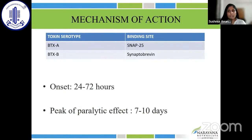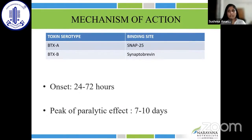The binding site differs for different types of botulinum toxin. For botulinum toxin type A, it is at SNAP25, and for botulinum toxin type B, it is at synaptobrevin. The onset of action is 24 to 72 hours, and the peak of the paralytic effect is observed at about 7 to 10 days. This is very important in patient counseling — we must counsel patients that it takes about 7 to 10 days for the peak paralytic effect to set in.